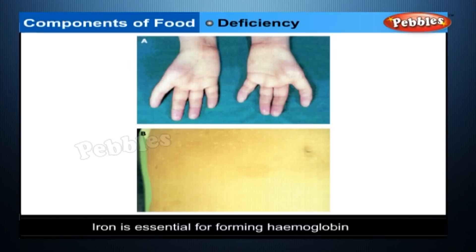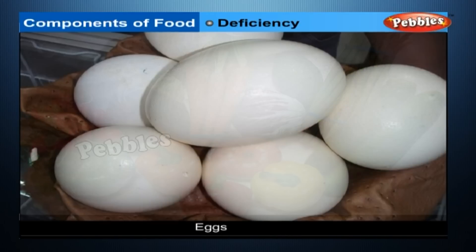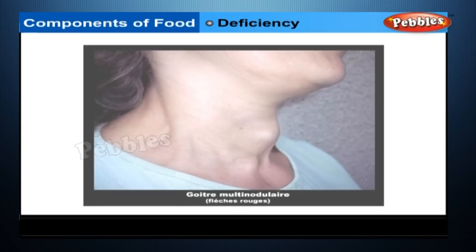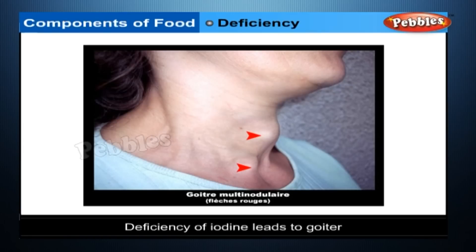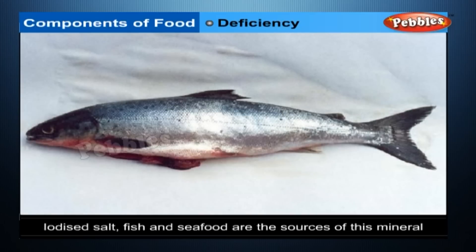Mineral Deficiencies: Iron is essential for forming haemoglobin, a component of our blood; deficiency of iron causes anaemia. Green leafy vegetables, eggs, groundnuts and liver are good sources of iron. Iodine, another mineral, controls the functioning of an important gland — the thyroid. Deficiency of iodine leads to goitre. Iodized salt, fish and seafood are the sources of this mineral.